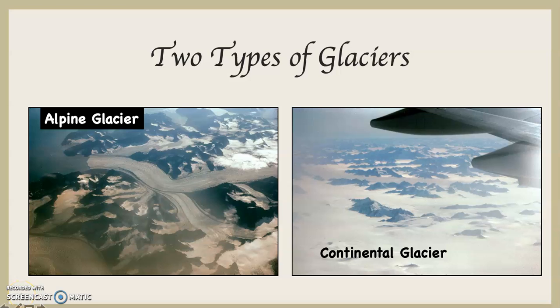For our purposes, there are two types of glaciers — there's really a subtype, but we aren't going to worry about it. There are alpine glaciers and continental glaciers.